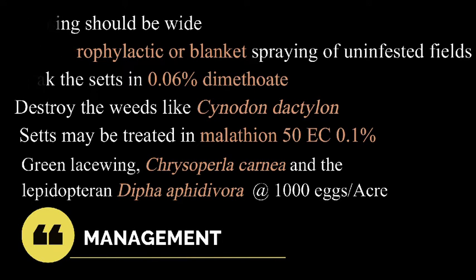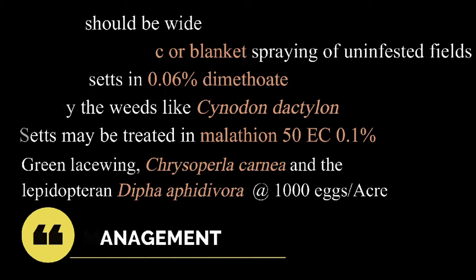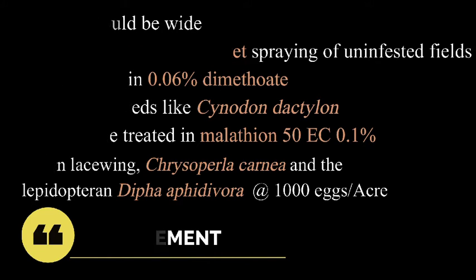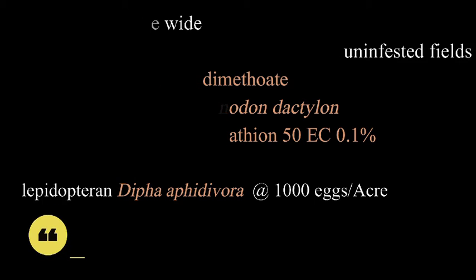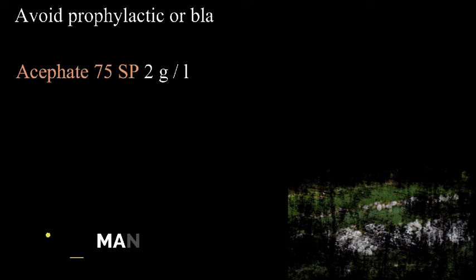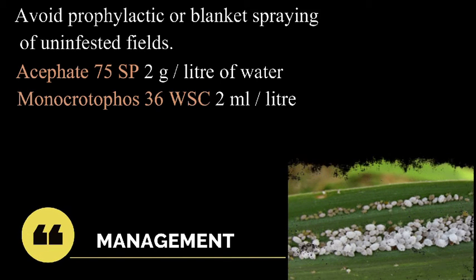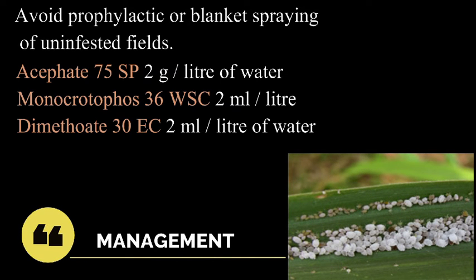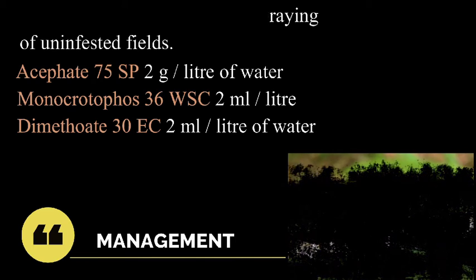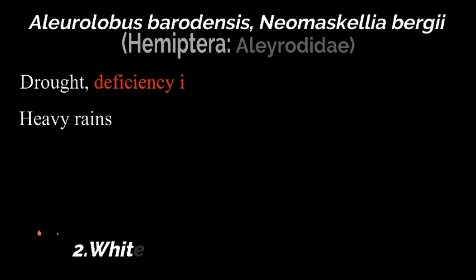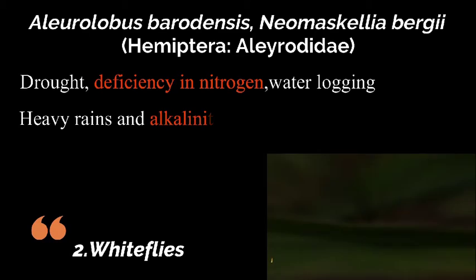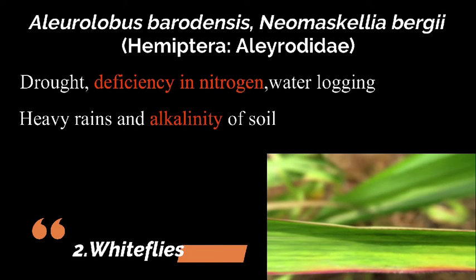Biological control: the green lacewing Chrysoperla cornea and the lepidopteran Dipha aphidivora are potential predators of woolly aphids. Use a high volume sprayer to spray acephate 75 SP 2 gram per liter of water, monocrotophos 36 WSC 2 ml per liter of water, or dimethoate 30 EC 2 ml per liter of water.